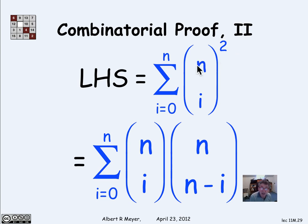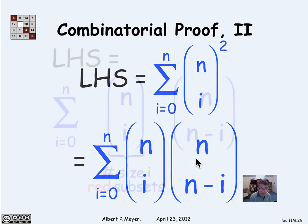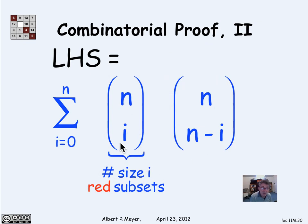So let's just change one of these n choose i. There's a product of two of them because it's squared. Change one of them into n choose n minus i and n choose i. And now I can start making sense out of this one. Because what n choose i, I can think of, is the number of ways to choose i subsets of the red elements.